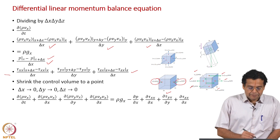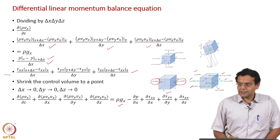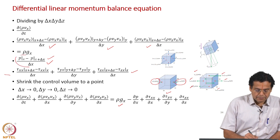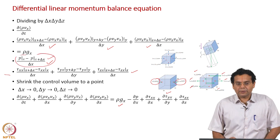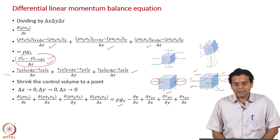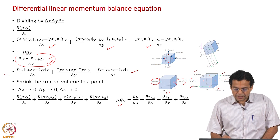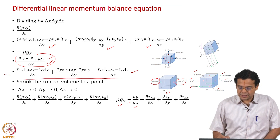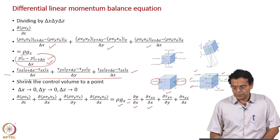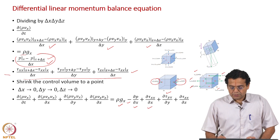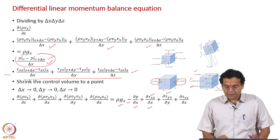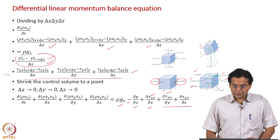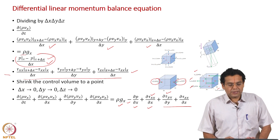We have ∂/∂x of ρv_x v_x representing the convective term, then similarly along y direction and z direction — remember we are still talking about x momentum only. On the right hand side we have ρg_x. The pressure term becomes −∂p/∂x because it is p at x minus p at x plus delta x; in the limit it becomes −∂p/∂x. The surface stress terms become ∂/∂x of τ_xx, representing the normal stress contribution, and ∂/∂y of τ_xy and ∂/∂z of τ_zx for the shear stress contributions.